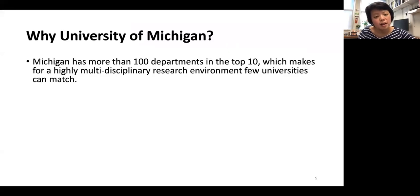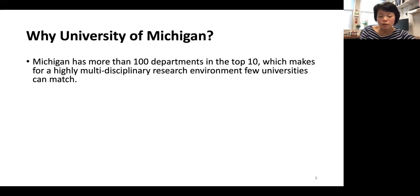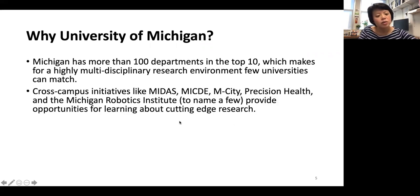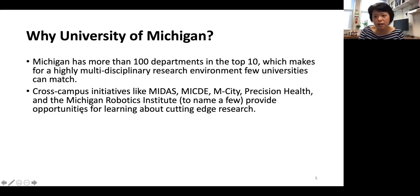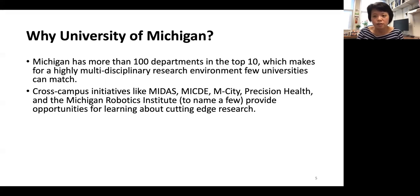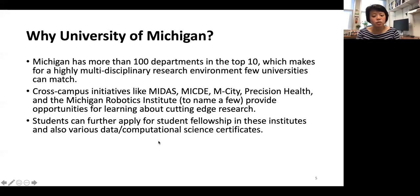So why University of Michigan? Michigan is a very comprehensive university with more than 100 departments ranked top 10 in their field, making multidisciplinary research very doable — especially for coursework and research as PhD students. We have a lot of cross-campus initiatives like MIDAS, MCD, Precision Health, and the Robotics Institute. These places offer certificates, courses, and research opportunities with faculty, internships with companies using data science and computational tools across many application areas. Students can apply for fellowships at these institutes and earn computational or data science certificates.